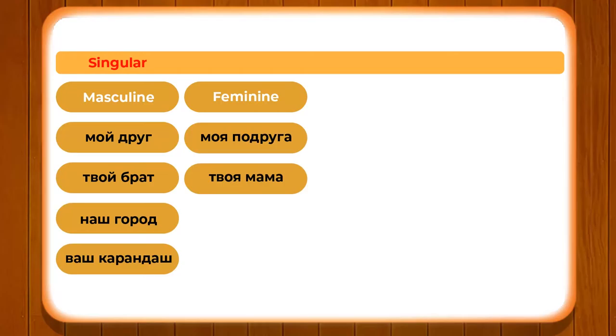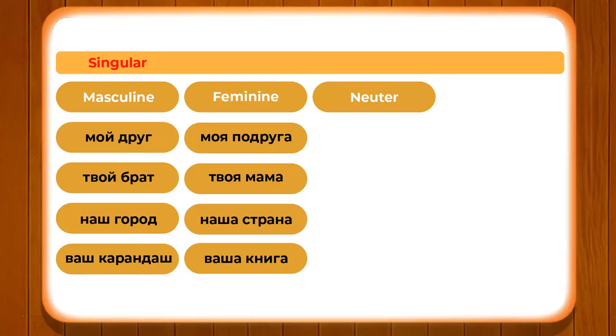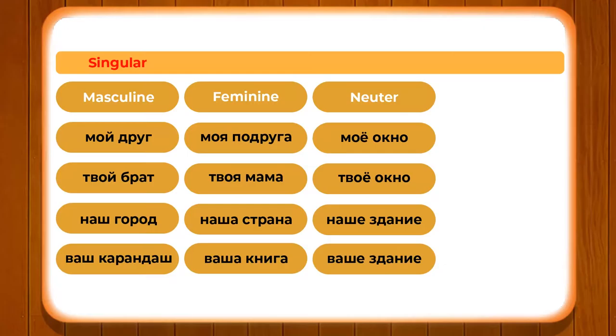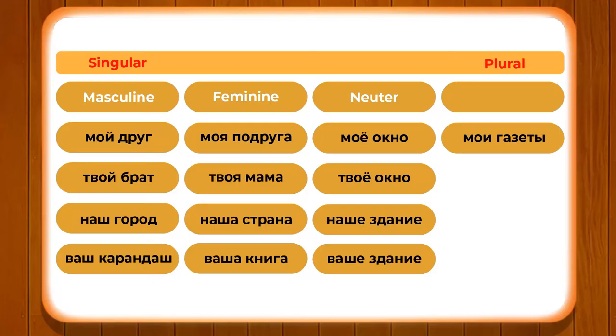In the masculine we have MOI DRUG, TWOY BRAD, NAASH GORAD, and VAASH KARANDAASH. In feminine we have MAYA PADRUGA, TWOYA MAMA, NAASHA STRANA, NAASHA KNIGA. In neuter we have MAYO AKNO, TWOYO AKNO, NAASHE SDANYA, VAASHE SDANYA. When changing into plural — MOI, MAYA, MAYO, and MAI — depending upon the ending of the noun, we change them into plural.